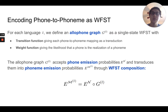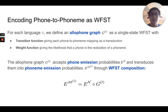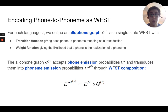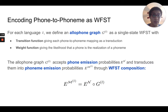So what we need to do is encode the phone-to-phoneme mappings in a way where we can learn some disambiguations. What we do here is define allophone graphs, which are WFSTs with a single state, where a transition and corresponding weight tells us the likelihood that a phone is a realization of a particular phoneme.